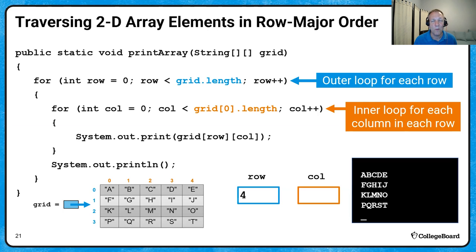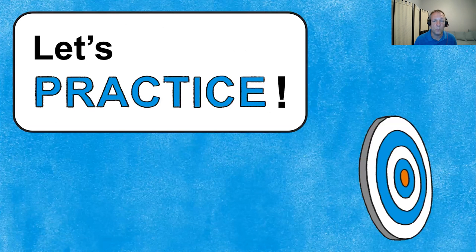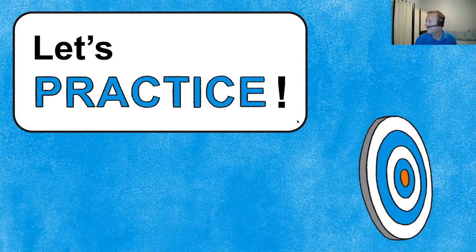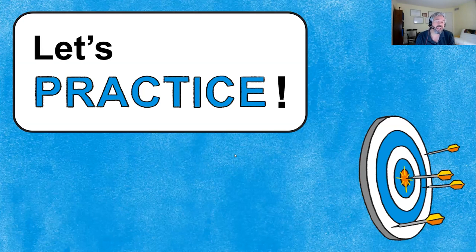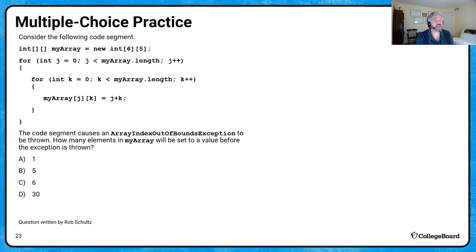Those are going to come in really handy because when we look at some multiple choice questions, the 2D array traversals and nested for loops Tim just shared are going to pop up all over the place. Here's a good example.